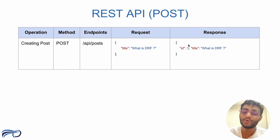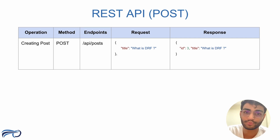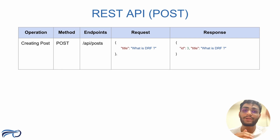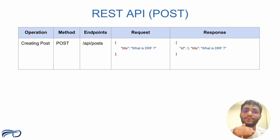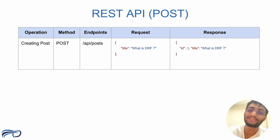Now let's understand the POST method. If you want to create a new entry in the database, we use the POST method with the endpoint '/api/posts'. We need to pass a request body indicating which data we need to create in the database — it will be in JSON format. For example, to create a new post with a title 'What is DRF', it will go into the database and create that entry with a new ID, say ID 3.